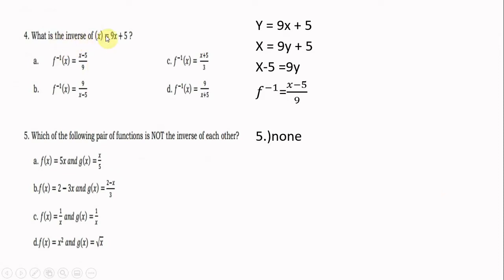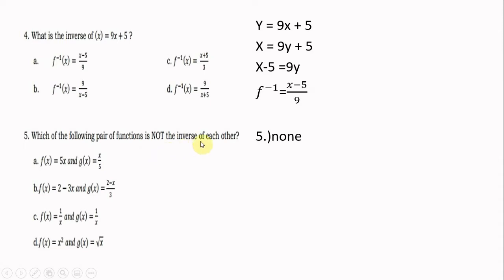Number four: what is the inverse of f(x) = 9x + 5? To solve this, change f(x) into y, so y = 9x + 5, then interchange the position of y and x — y becomes x and x becomes y — so x = 9y + 5. Solve for y: transpose positive 5 to the left side, it becomes negative 5, equals 9y. Divide both sides by 9, so the inverse is (x − 5)/9, which is letter A. Number five: which of the following pairs of functions is not the inverse of each other? The answer is none — all of them are inverses.